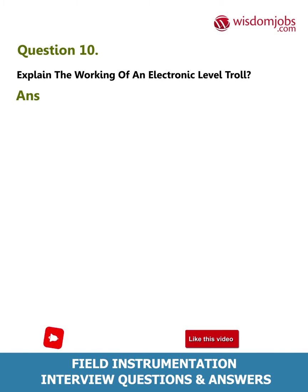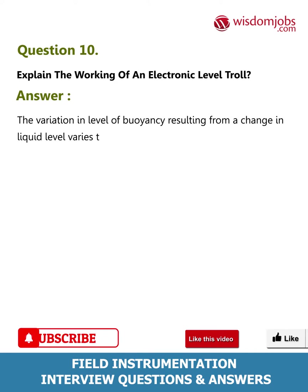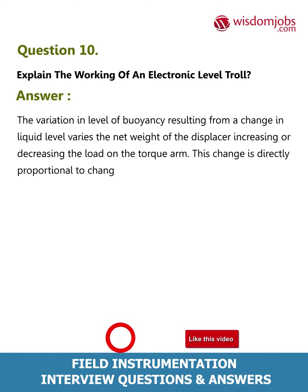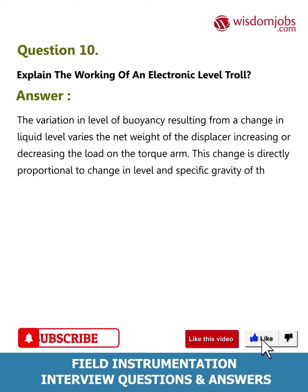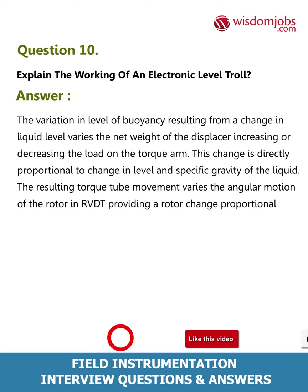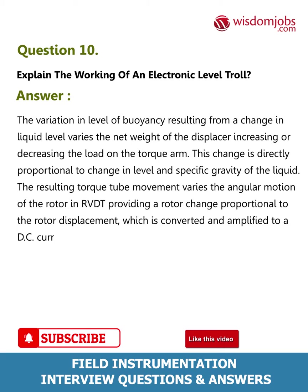Question 10: Explain the working of an electronic level troll. Answer: The variation in buoyancy resulting from a change in liquid level varies the net weight of the displacer, increasing or decreasing the load on the torque arm. This change is directly proportional to the change in level and the specific gravity of the liquid. The resulting torque tube movement varies the angular motion of the rotor in an RVDT, providing a rotor change proportional to the rotor displacement, which is converted and amplified to a DC current.